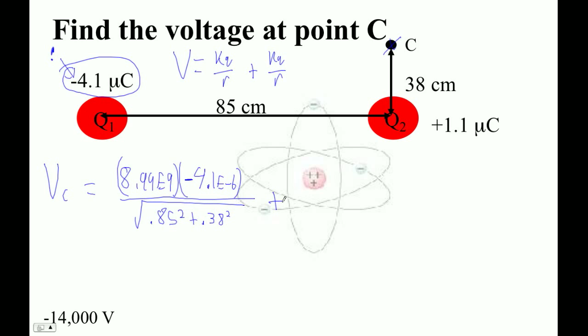And then we're going to do the voltage due to this guy, right? So this is the voltage due to Q1, and then this guy will be the voltage due to Q2.